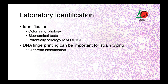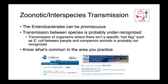If you find yourself in an outbreak situation, I would strongly encourage you to talk to the lab about the best diagnostic strategy for identifying the source. As an order, the Enterobacteriales can be quite promiscuous — they're found kind of anywhere and everywhere. Transmission between species is probably under-recognized, and transmission of organisms where there isn't really a red flag, like E. coli between people and companion animals, is probably just not recognized. If we're dealing with plague, public health officials will zero in on that — but many of these bacteria are far more mundane and probably there's transmission going on that's flying under the radar. I would recommend checking out websites like ProMed Mail, which serve as an early warning system for reporting emerging diseases and potential zoonoses.